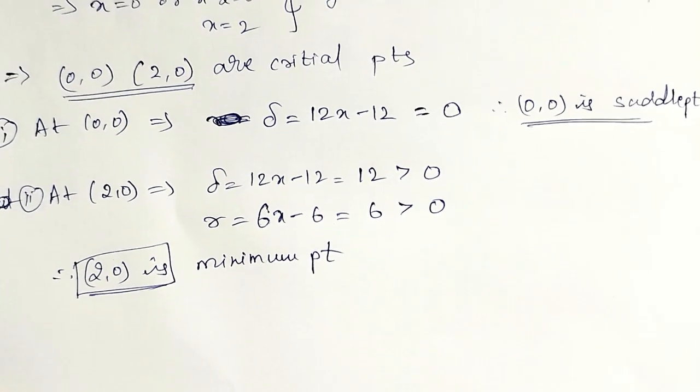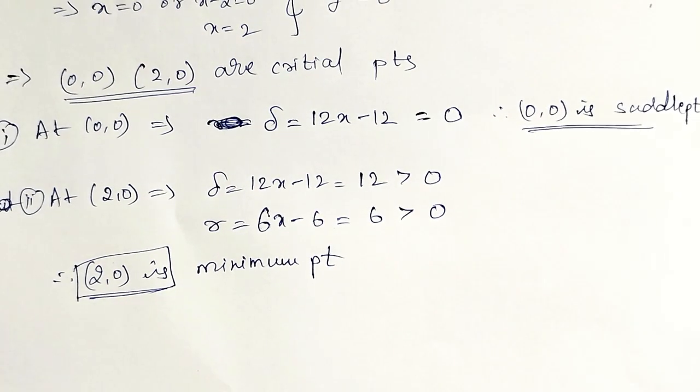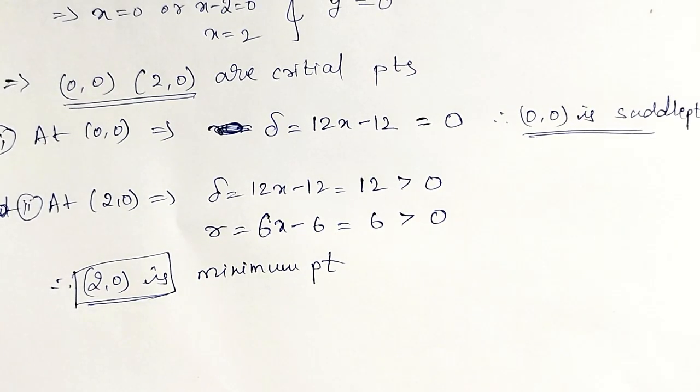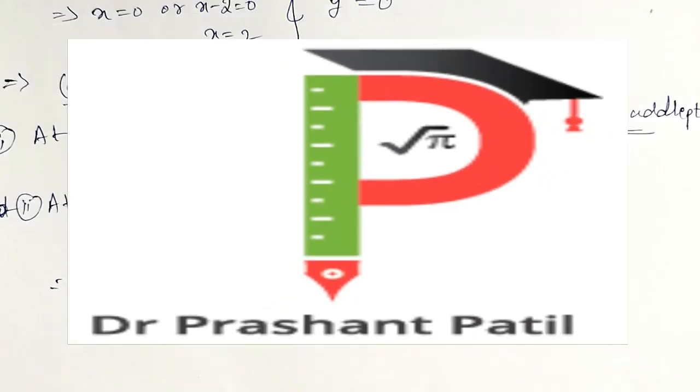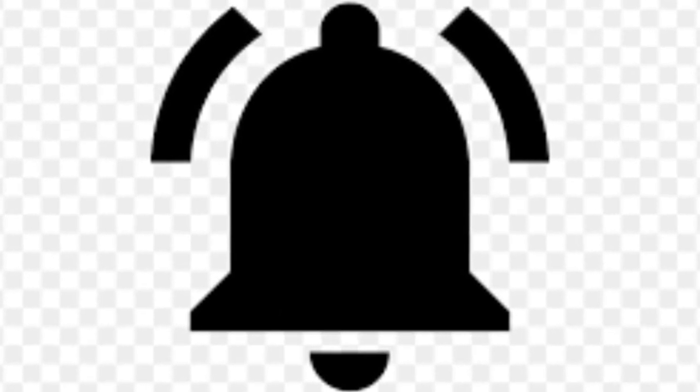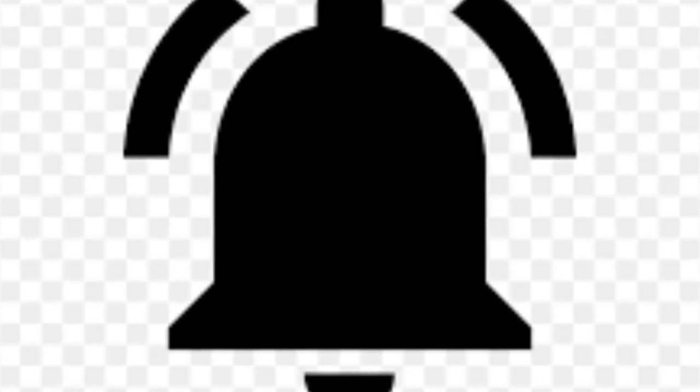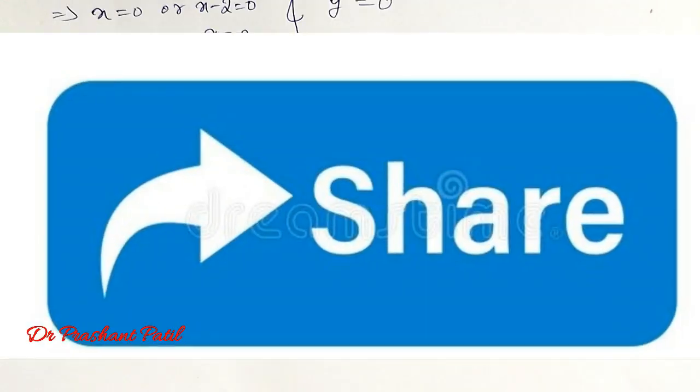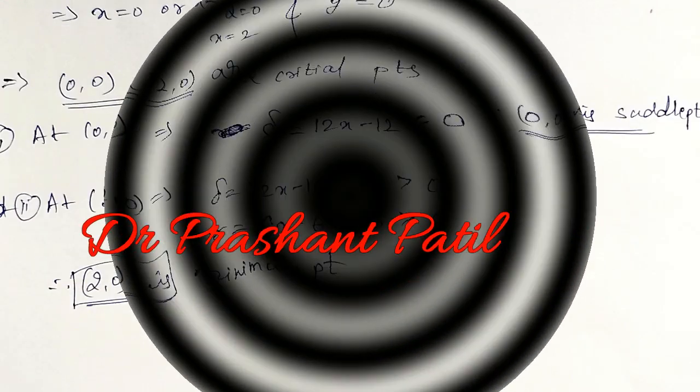This is the saddle point. Only two critical points are here. Some more examples I am going to solve in my next videos. On this maximum and minimum. If you not have subscribed my channel, please subscribe my channel. Don't forget to hit the bell icon. So that you will get the notifications of my next videos. Like this video. Comment. And also share this video. Thank you friends.